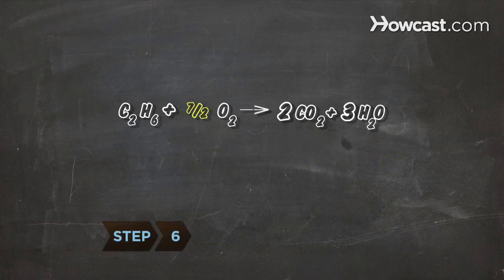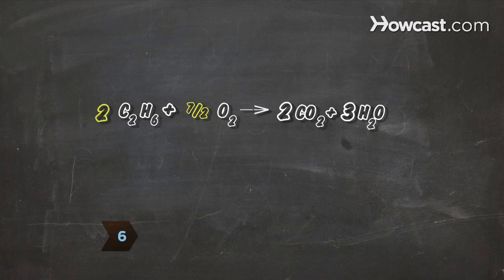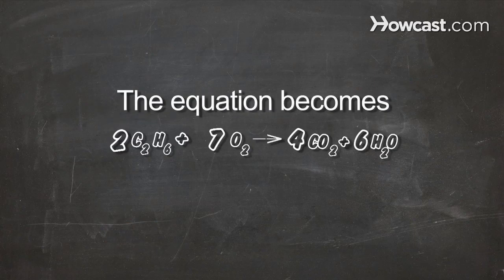Step 6: Eliminate any fractions in the balanced equation by multiplying through by the denominator of the fraction.